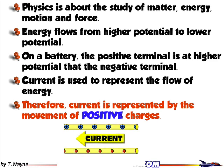Therefore, current is represented by the movement of positive charges. So our current goes from the plus side of the battery to the negative side of the battery. And electrons travel in the opposite direction of what we define as our current.